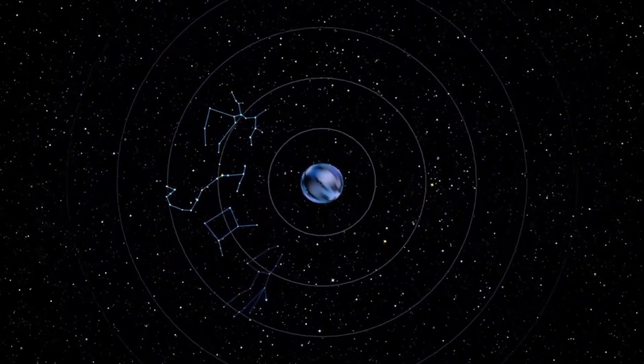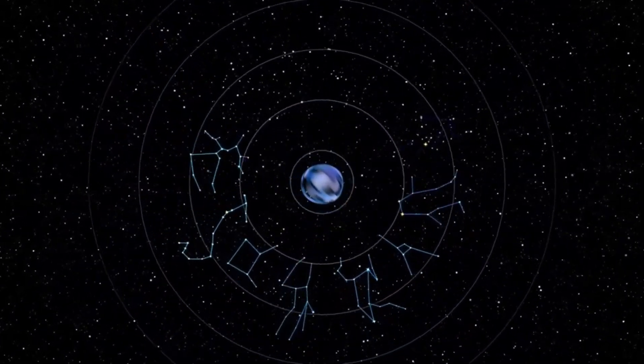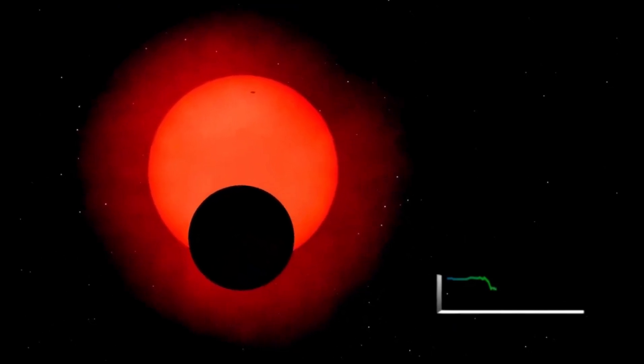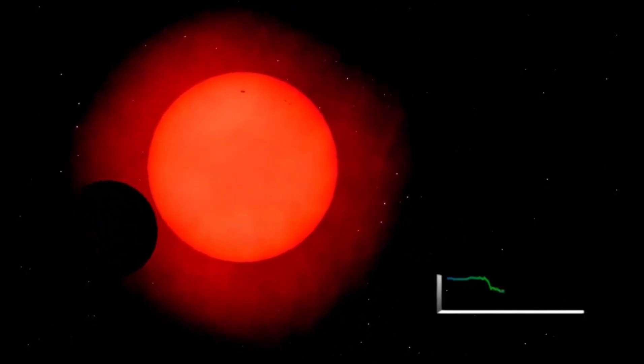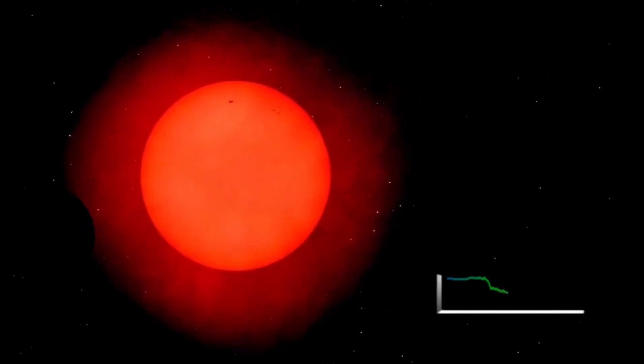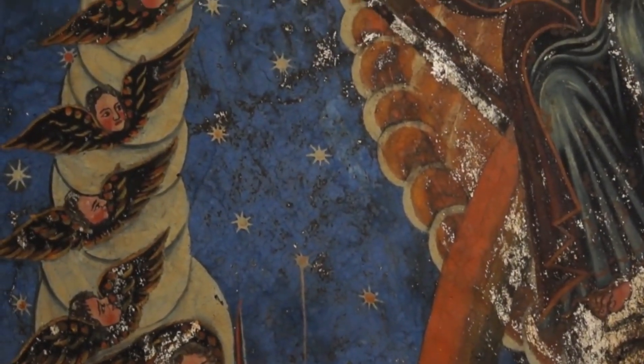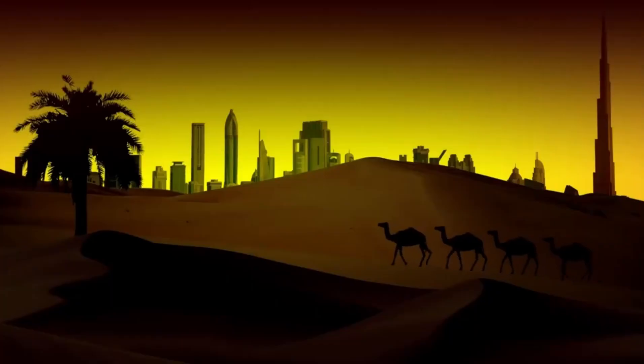In the grand tapestry of the cosmos, where stars are born, live, and die in spectacular fashion, one star has recently captured the imagination and concern of astronomers and the public alike. This star is Betelgeuse, a red supergiant of immense proportions and age situated conspicuously in the constellation Orion. Its distinctive reddish hue and variable brightness have long been a source of intrigue, but recent developments have intensified interest in this celestial giant.